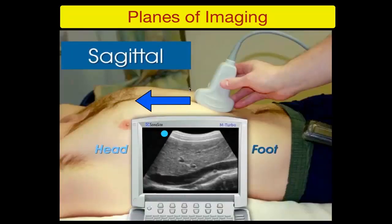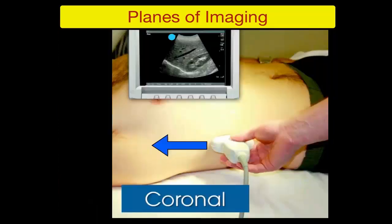In the sagittal view, keep the marker toward the head of the patient — this side is the head, the other is the feet, with anterior and posterior also visible, allowing you to see the long course of the inferior vena cava. In the coronal section, again keep the marker toward the head of the patient, so one side is toward the head, the other toward the feet, with the probe contact point being the lateral side and the other side toward the midline.